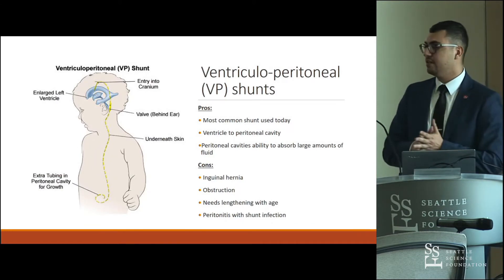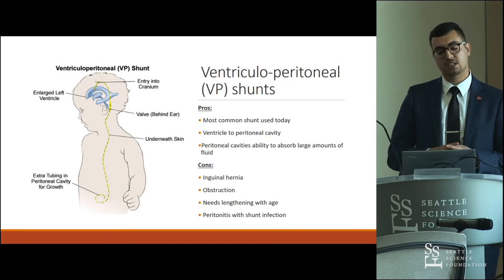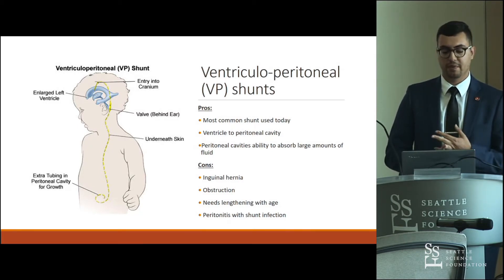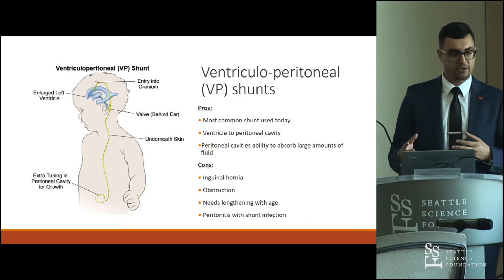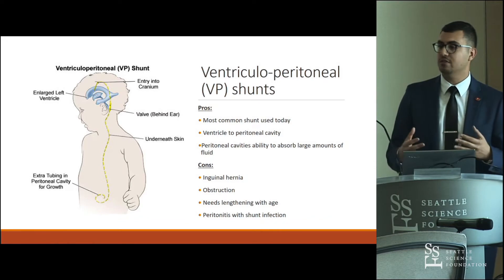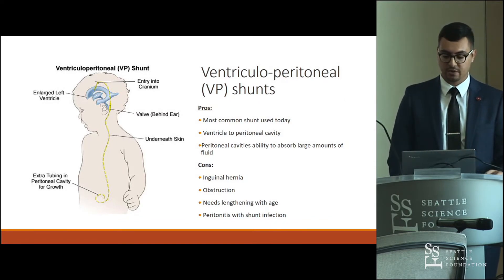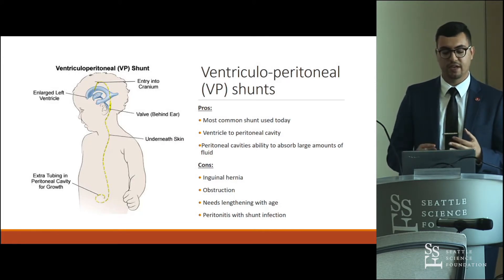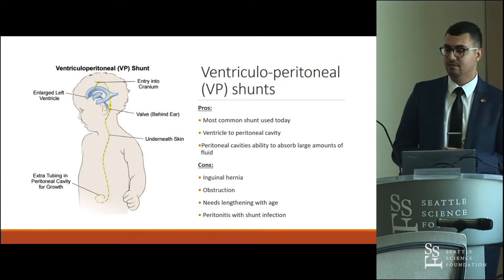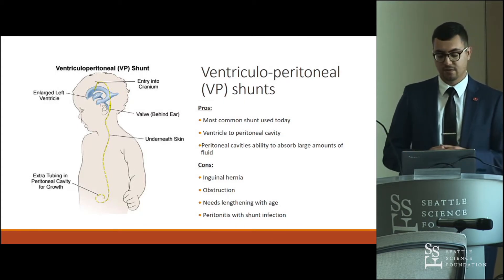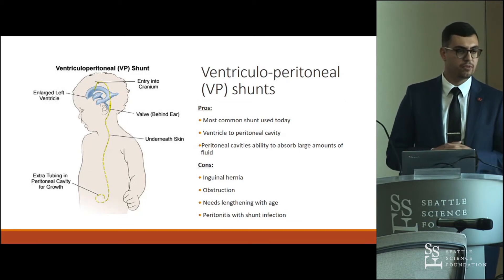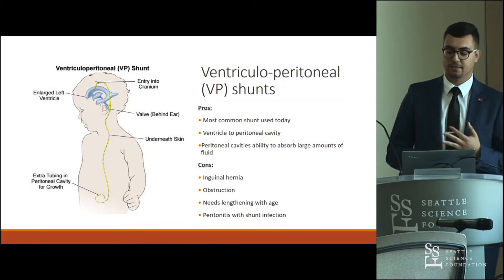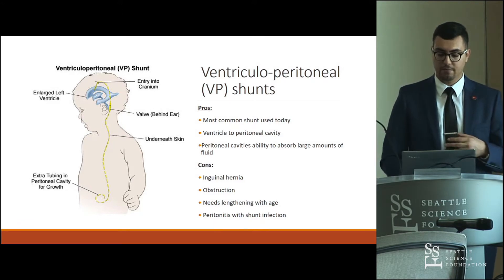The ventriculoperitoneal (VP) shunt is the most common shunt used. The proximal limb sits in the lateral ventricle and the distal limb in the peritoneal cavity, chosen for its large fluid-absorbing capacity. Downsides include inguinal hernias, obstructions, the need to lengthen the distal end as the child grows, and peritonitis risk since this is a foreign body. Contraindications include abdominal surgery, abdominal infection, appendicitis, peritonitis, diverticulitis, or active antibiotic treatment for abdominal pathology.